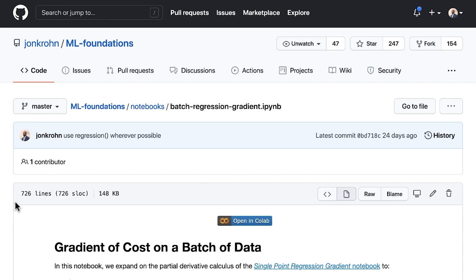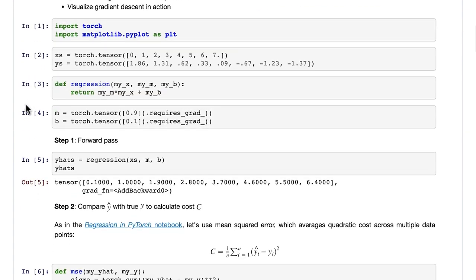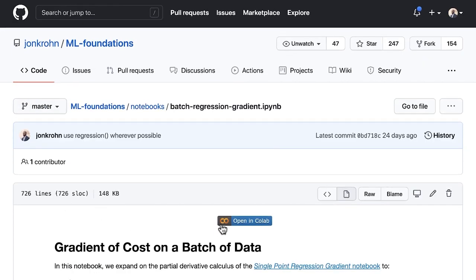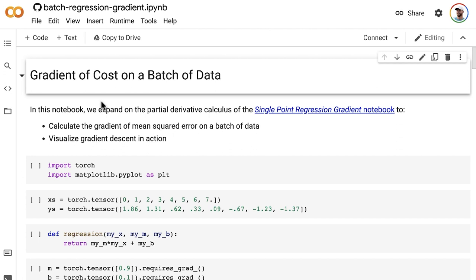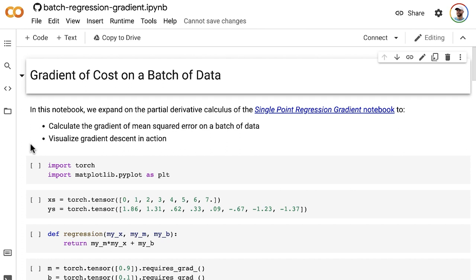As with all of the Jupyter notebooks in my machine learning foundation series, all of the code in this batch regression gradient notebook has been executed. You're welcome to simply follow along in GitHub and look at the statically executed code. However, I do recommend, for the sake of practice, to open this notebook up in Colab. When you do that, you can execute all of the code interactively along with me. As usual, we are going to want to go to the Edit menu and Clear All Outputs, which will mean that all of the code that we had executed in the static view is no longer executed, and we can run it ourselves for the first time.